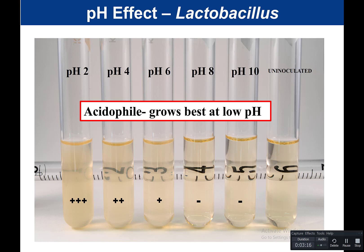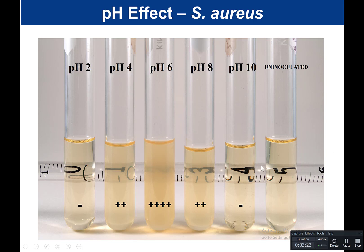If we look at Staph aureus, here is our uninoculated control. pH 10 did not grow, and pH 2 did not grow. At pH 6, you can almost not see the number altogether, so I quantitated that as 4+. pH 8 and pH 4 look approximately the same, quantitated as 2+. Note that this method of quantitation is very subjective — what I call 2+, you might call 1+ or 3+. But the idea is still the same.